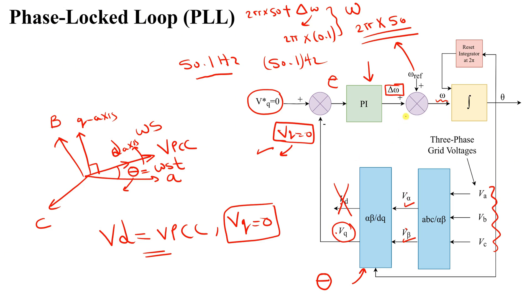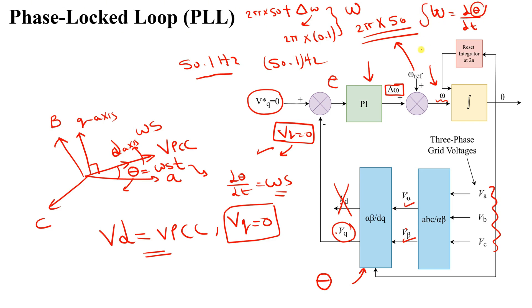We know that omega = dθ/dt, so the angle theta equals the integral of omega. By integrating omega we will estimate theta. This estimated theta then feeds back into the same loop at the alpha-beta to DQ transformation block.